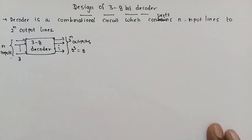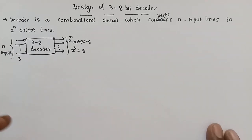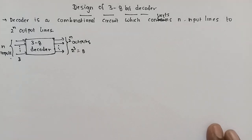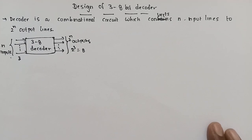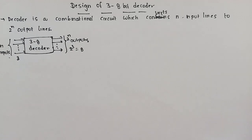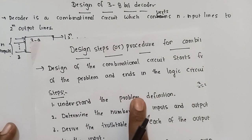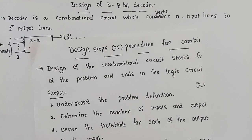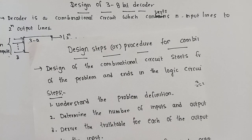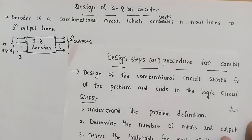So, a 3 to 8 bit decoder is a combinational circuit which converts the 3 input lines to the 8 output lines. Now we are going to discuss this in this video. The first step is to do a combinational circuit design. First, we need to understand the problem definition — we will use the 3 to 8 bit decoder. Next, determine the number of inputs and outputs. For the 3 to 8 bit decoder, we have 3 bits.